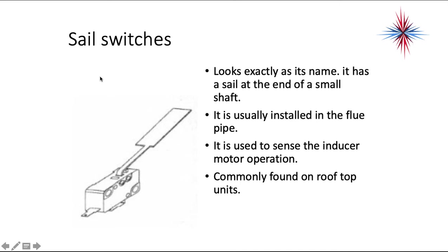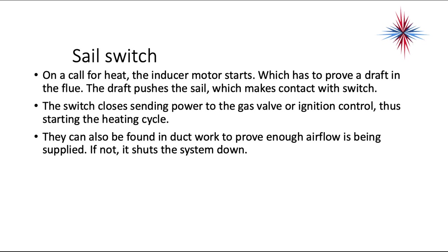Another type of switch — not used as much anymore but still found with humidifiers or electric heat — is called a sail switch. It looks exactly as its name: it has a sail on the end of a small shaft. It's usually installed in the flue pipe or in the ductwork. It's used to sense the inducer motor operation if it's in the flue pipe, or to make sure there's air flowing if it's in the ductwork. It's commonly found on rooftop units. On a call for heat, the inducer motor starts and provides draft in the flue. The draft pushes the sail, which makes contact with the switch, closing it and sending power to the gas valve or ignition control to start the heat cycle. They can also be found in ductwork to prove enough airflow is being supplied — if not, it shuts the system down.